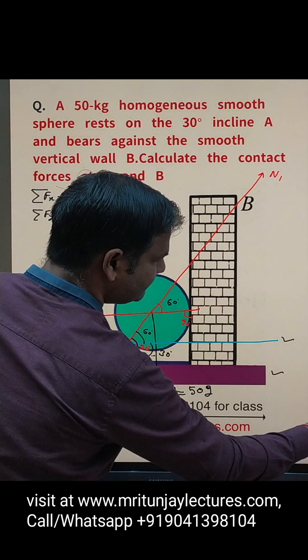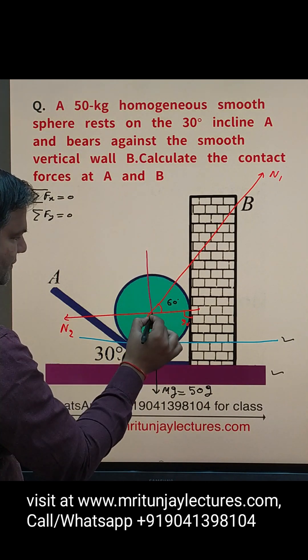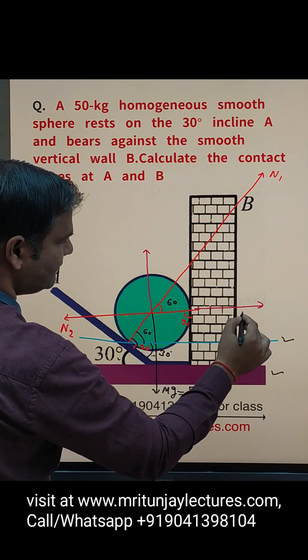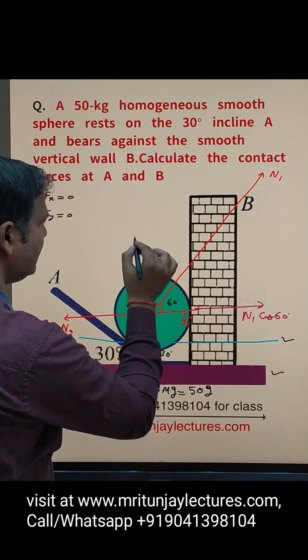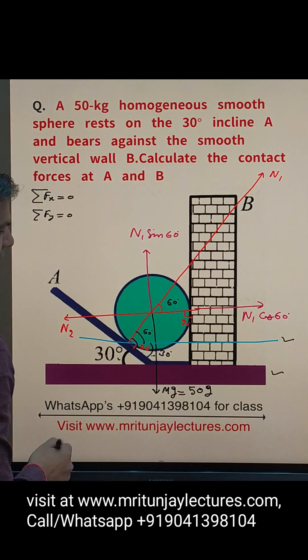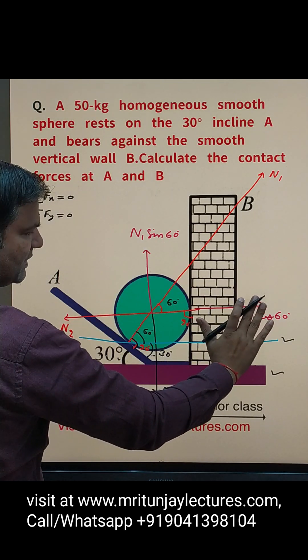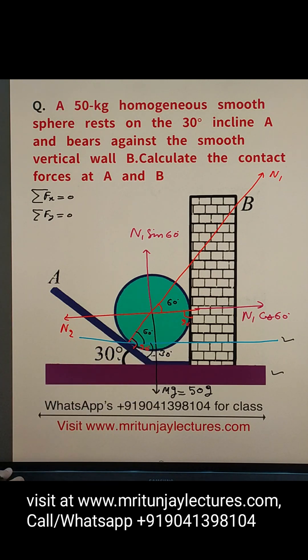So you've got components of that force along x-axis and y-axis. Here N1, so N1 cos 60 and here N1 sin 60. It means corresponding to that force is equal to that force, and this is equal to that force.